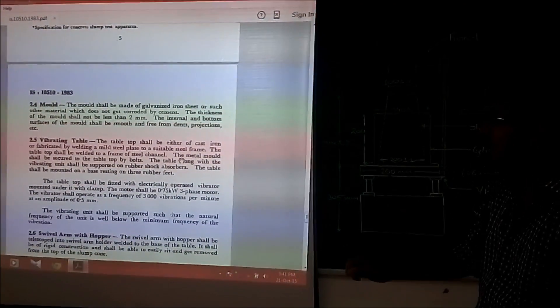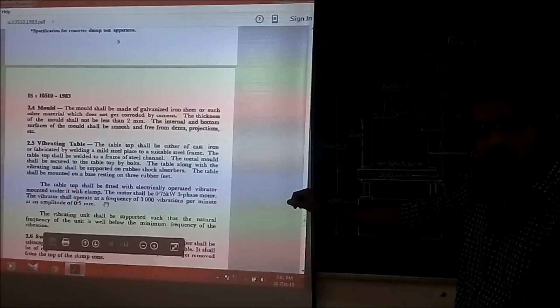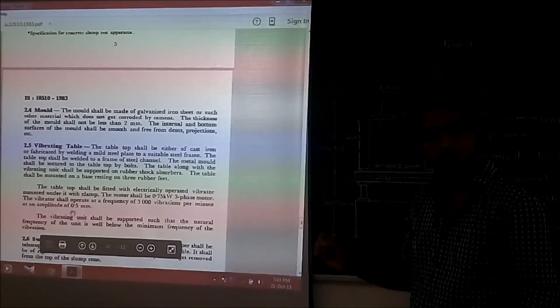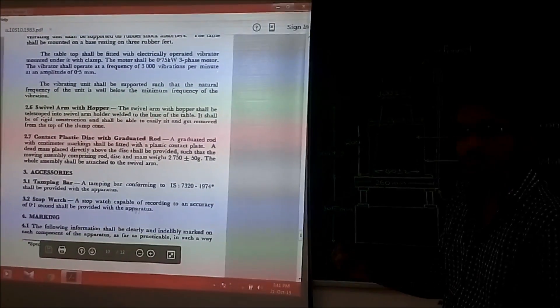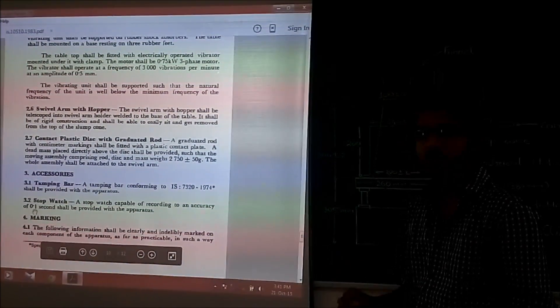Like for vibrating table, it should have a frequency of 3000 vibrations per minute and its amplitude should be 0.5 mm. Also, the stopwatch, it should have an accuracy of 0.1 seconds.